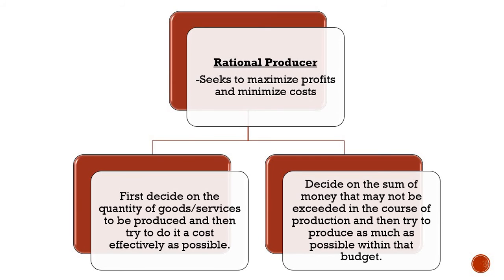Then we look at the rational producer, someone who seeks to maximize profits and minimize costs. They do this in two ways. First, by deciding on the quantity of goods or services to be produced and then producing as cost-effectively as possible. Second, by deciding on the sum of money that may not be exceeded in the course of production, and then producing as much as possible within that budget.